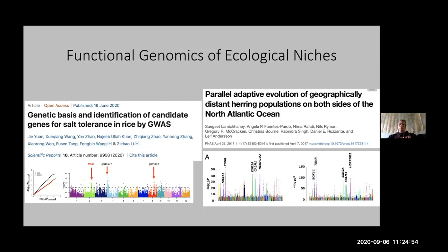Two recent papers are getting at more nuanced situations. One addresses the genetic basis for salt tolerance in rice — associating a few genes strongly with salt tolerance, which is closer to ecological information. The other addresses spawning time in herring, using genome-wide association to show that on both sides of the Atlantic, spawning time is determined by different loci, indicating parallel evolution of the same trait via different genetic mechanisms.